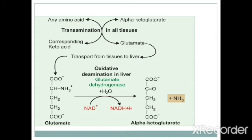By transamination, the amino group from any amino acid is transferred to alpha ketoglutarate forming glutamate in all tissues. This glutamate is transported to the liver, where glutamate dehydrogenase oxidatively deaminates it to alpha ketoglutarate and ammonia. Non-oxidative deamination is catalyzed by dehydratases — for example, serine is converted to pyruvate by serine dehydratase, and threonine is converted to alpha keto acid by threonine dehydratase.